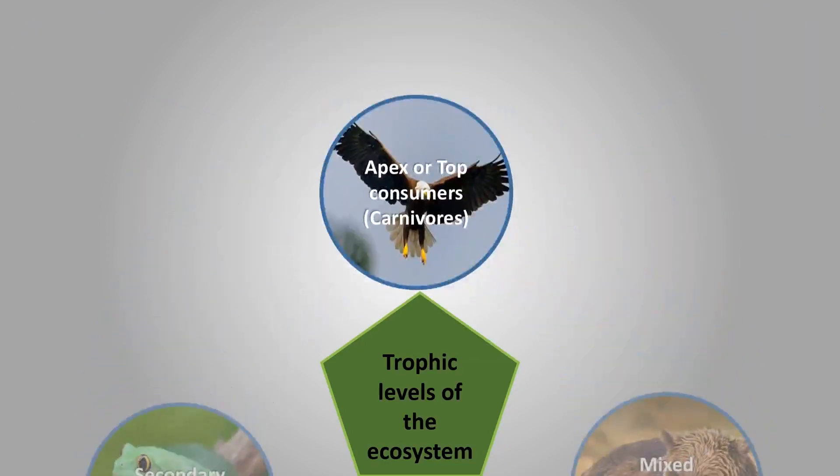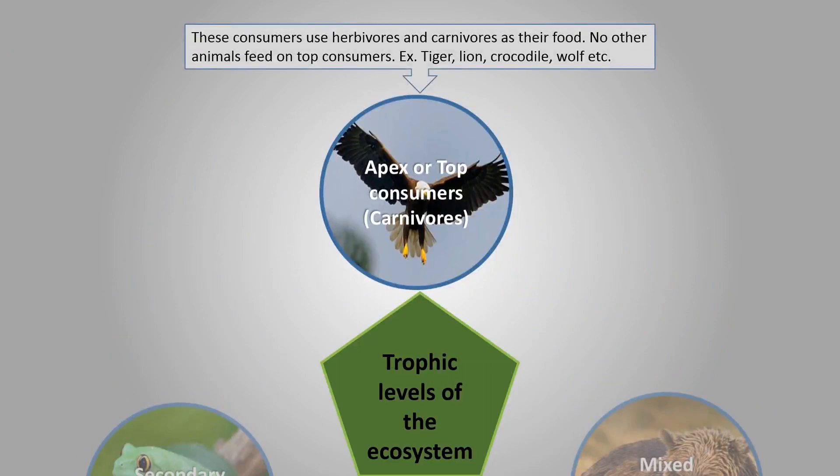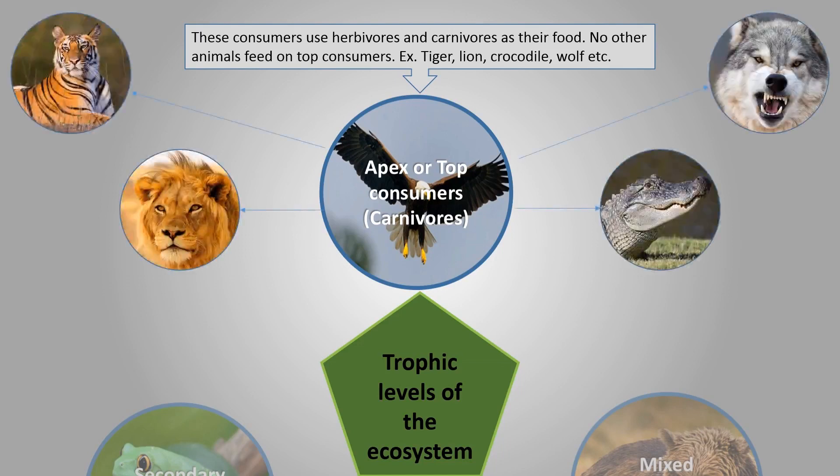Apex or top consumers, these consumers use herbivores and carnivores as their food. No other animals feed on the top consumers. Examples: tiger, lion, crocodile, wolf, etc.